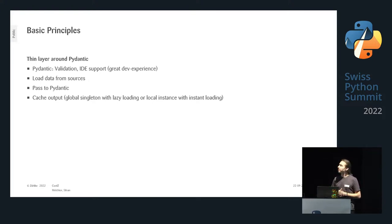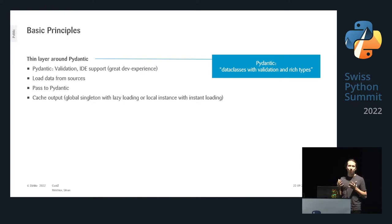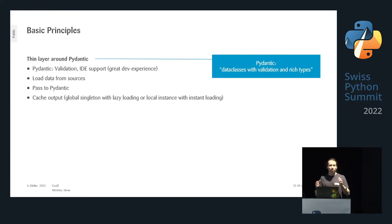We'll first go into the basic principles and then look under the hood. Some of you may know Pydantic — for those who don't, it's basically data classes but with validation and rich types. You can define a data class with more types than standard Python offers, and you get validation so you can't just put any data in. ConfSet is just a layer around Pydantic: it loads data from sources, passes it to Pydantic, which then handles validation and persisting.